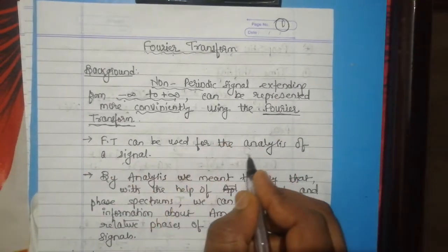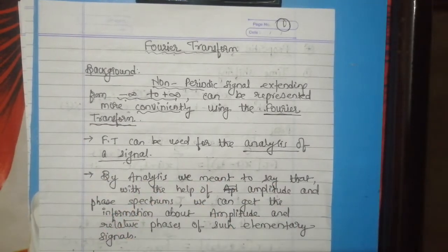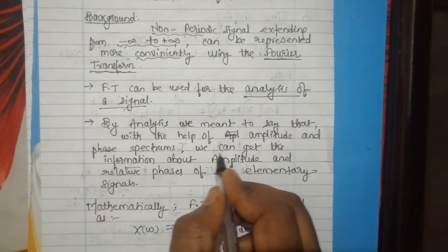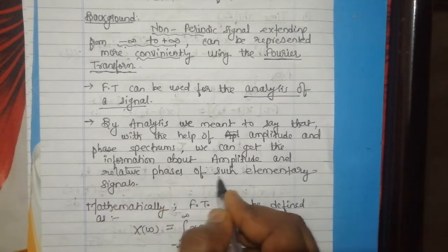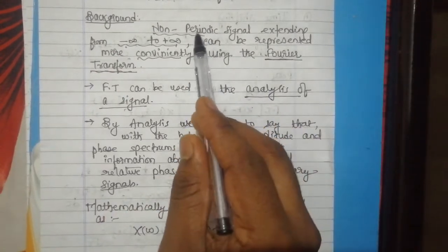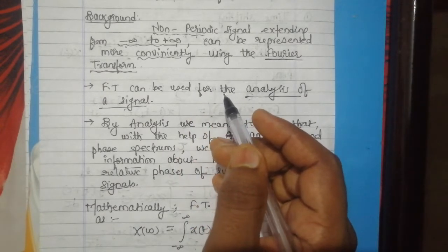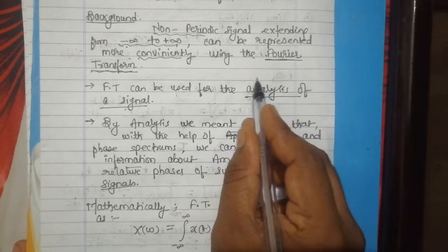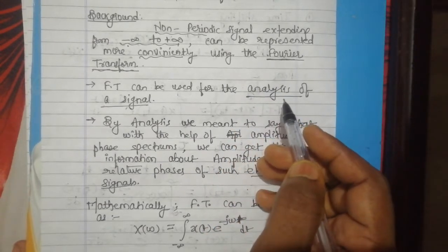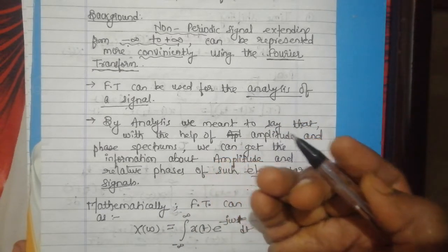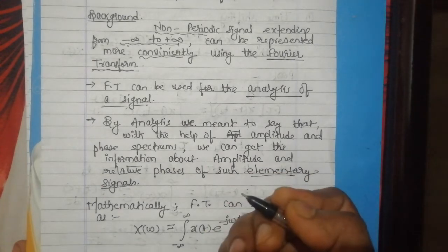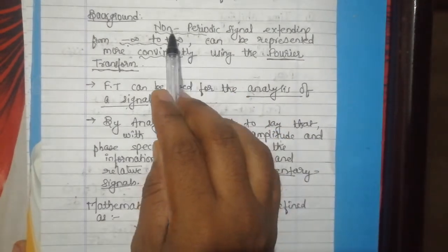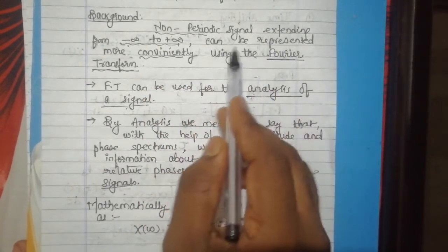Fourier Transform is used for the analysis of a signal. By analysis, I mean that with the help of the amplitude and the phase spectrum, we can get information about the amplitude and relative phases of such elementary signals. Fourier Transform is a mathematical tool by using which we can convert a time domain signal to a frequency domain signal for the purpose of its analysis. If your signal has more than one frequency component, we can easily analyze the amplitude and phase value of each frequency component with the help of Fourier Transform.